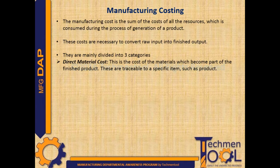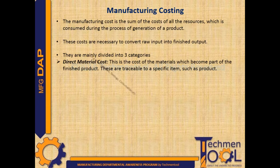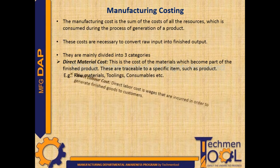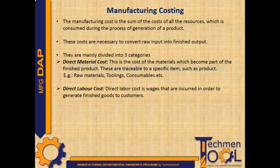Direct material cost is the cost of the materials which become part of the finished product. These are traceable to a specific item such as a product. Examples include raw materials, toolings, consumables, etc.